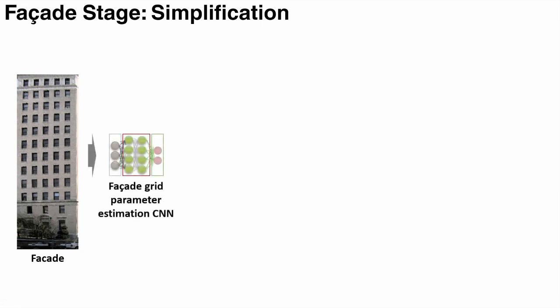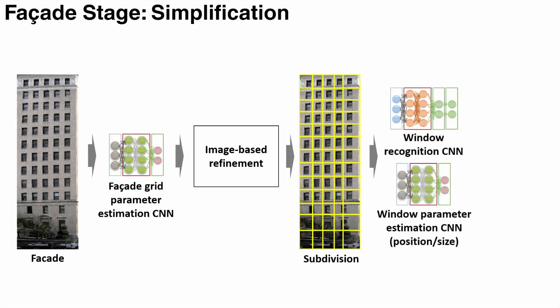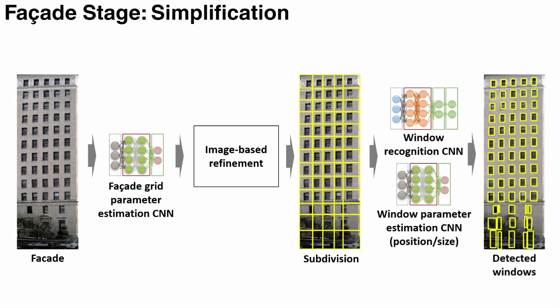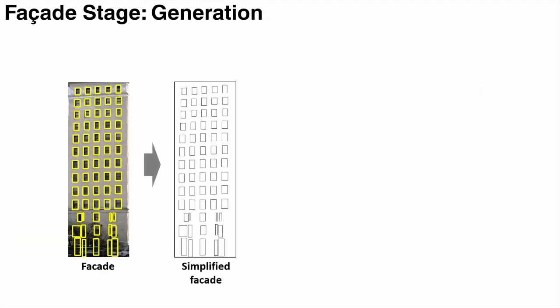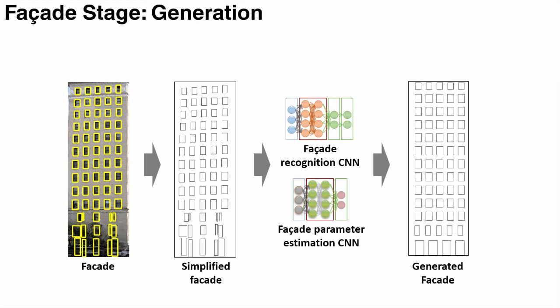The second stage starts by simplifying a rectified facade image. First, we estimate the average floor height and column width using a CNN. This gives us a uniform grid structure. Then, the following image-based method refines the facade subdivision based on gradient magnitude. Afterward, Window Recognition CNN and Window Parameter Estimation CNN find the location and size of the windows. As a result, a simplified facade image contains window boundaries without any geometry or texture. This simplified image is then used as input to another set of recognition and parameter estimation CNNs to recognize the facade structure and estimate the parameters such as floor height, column width, window size, and space between windows. The output of this stage is the facade grammar.